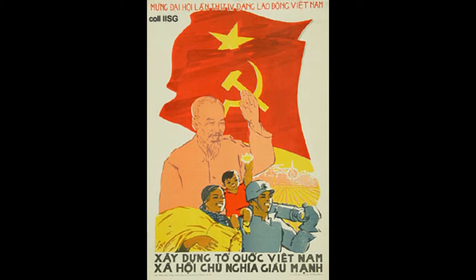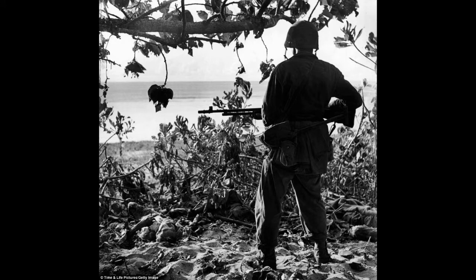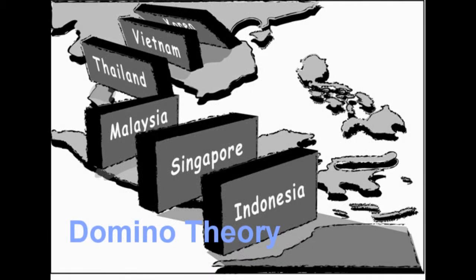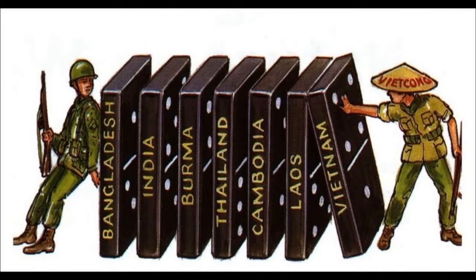For years, Ho had tried to court U.S. support against the French, including supplying military intelligence about the Japanese during World War II. Despite this aid, the United States was fully dedicated to their Cold War foreign policy of containment, which meant preventing the spread of communism. The fear of communism's spread was heightened by the domino theory, stating that if one country in Southeast Asia fell to communism, surrounding countries would also soon fall. To help prevent Vietnam from becoming communist, the U.S. decided to help France defeat Ho by sending French military aid in 1950.